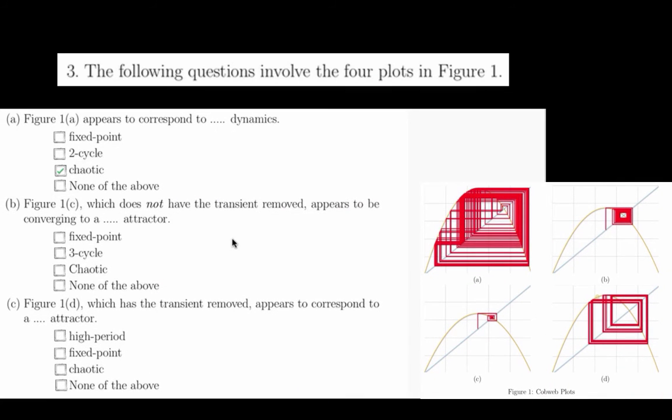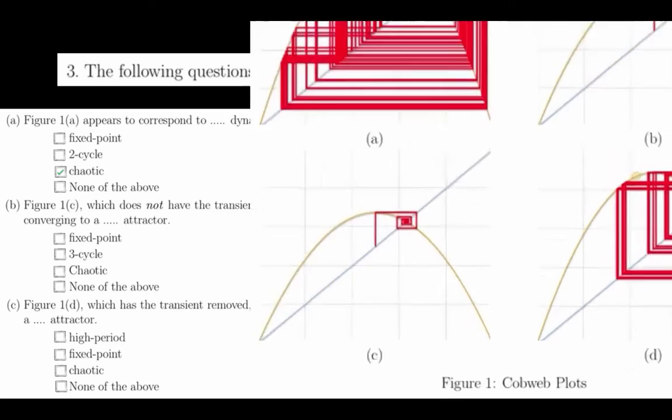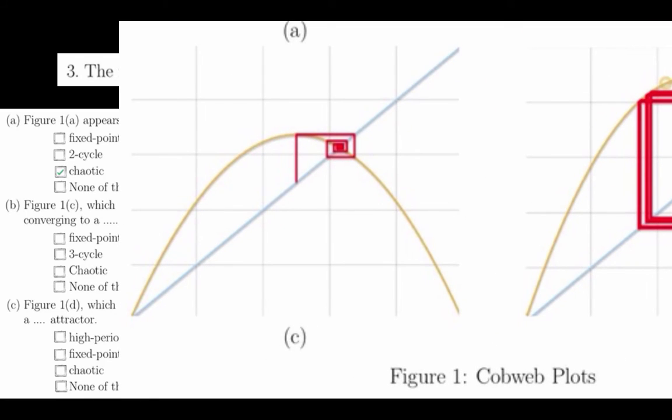For Part B, we are told in Figure 1C the transient has not been removed, and it appears that the trajectory has converged. As we saw in Question 2A, this type of Cobweb plot is associated with fixed-point dynamics.